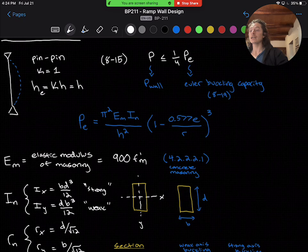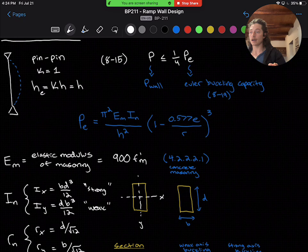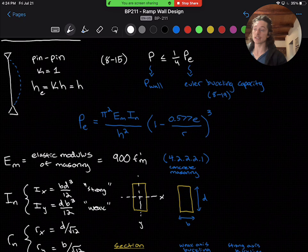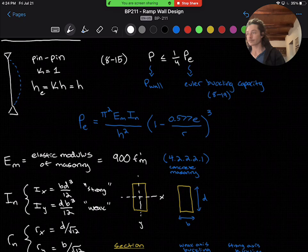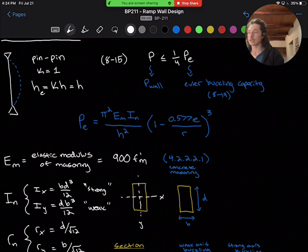EM is the elastic modulus of the masonry, which is a function of the compressive strength, F prime M. Makes sense—a stronger material is going to have a different elastic modulus than a weaker material. It's going to be based on some empirical value based on its strength. So section 4.2.2.2.1 gives an EM value of 900 times F prime M for concrete masonry, which we will use.